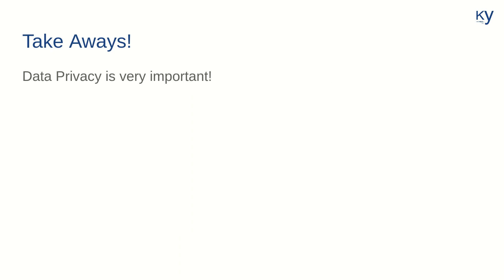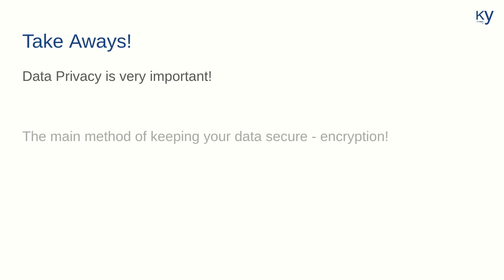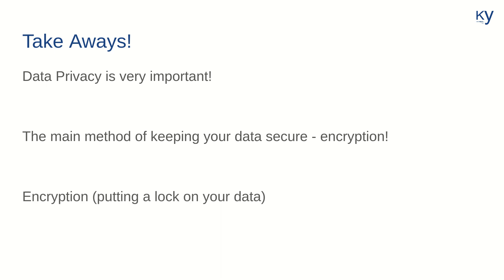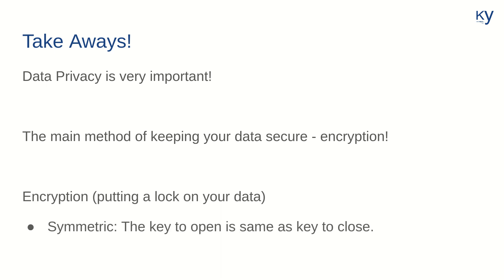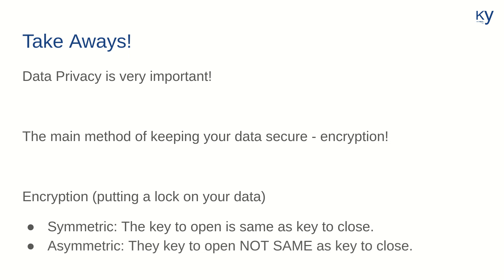So let's quickly summarize. Data privacy is extremely important — do not neglect understanding this concept. The main method of keeping your data safe is encryption, and there are two types: symmetric, where the key which locks is the same as the key which unlocks; and asymmetric, where the key which locks is not the same — there is a separate pair key which unlocks. That is the basic method by which all communication over the internet is encrypted. In future videos, we will come back to encryption and see how it is used for a variety of reasons. Thank you.